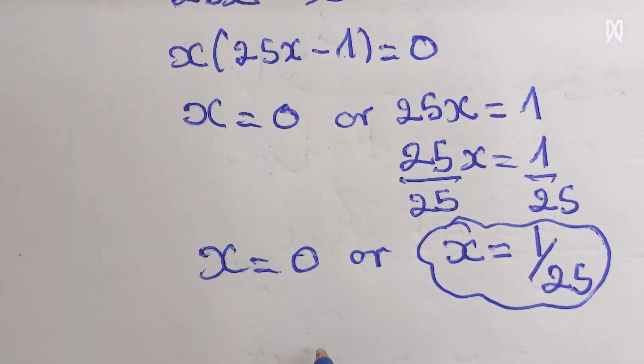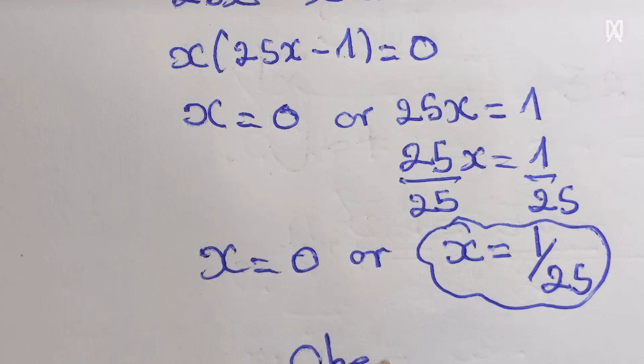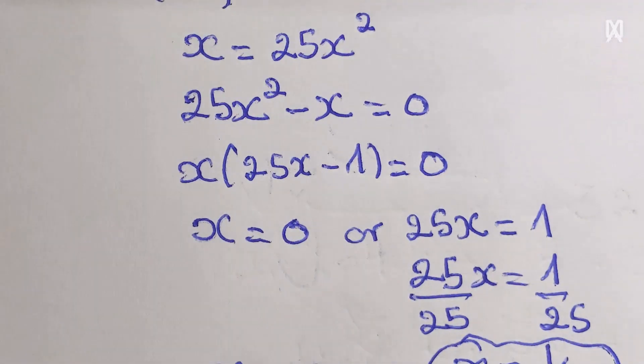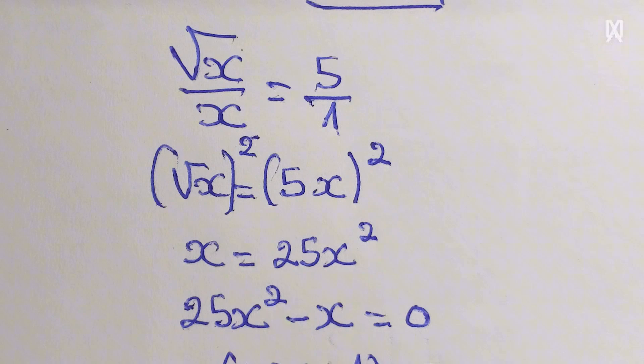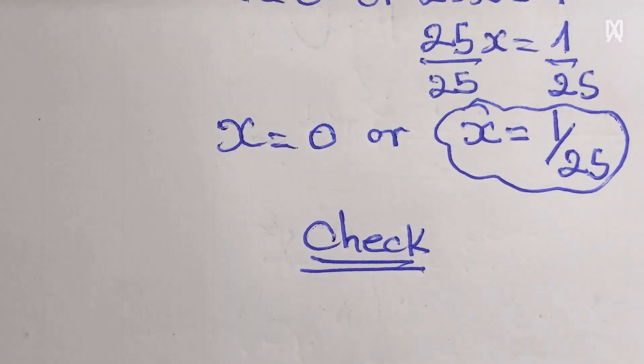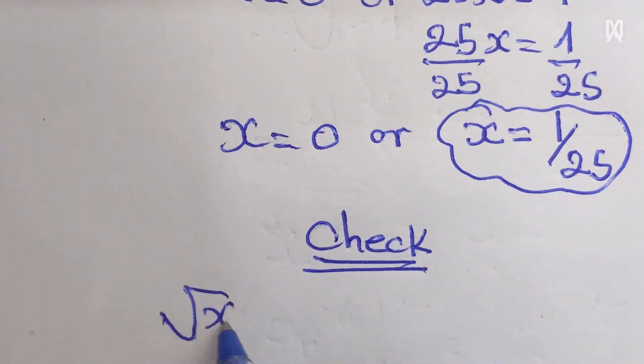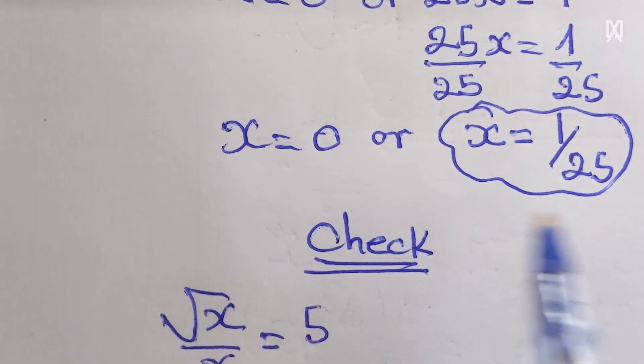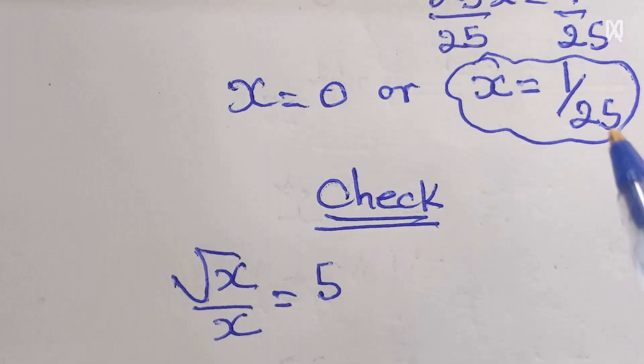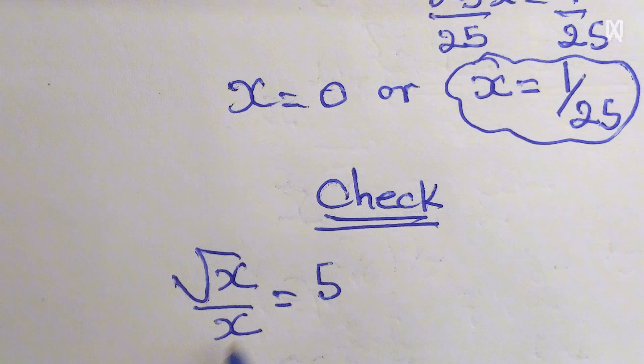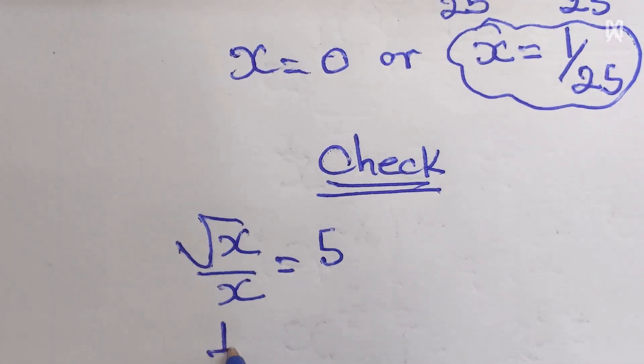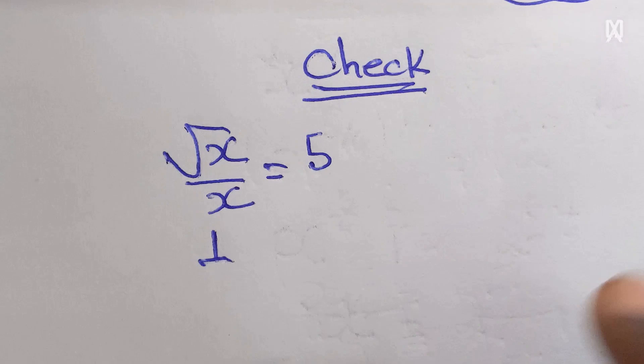Let us check to make sure that the solutions you have—you are going to plug in the above formula you have been given. Square root of x over x is equal to 5. This means here we have x is equal to 1 over 25.